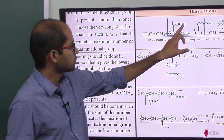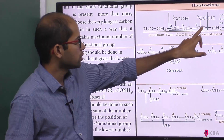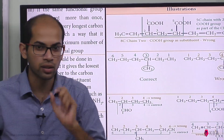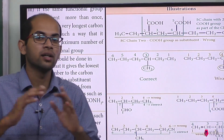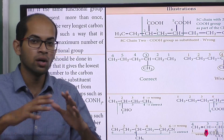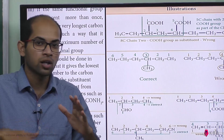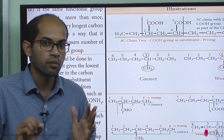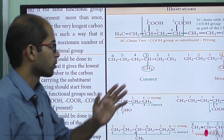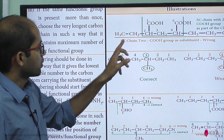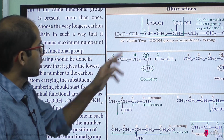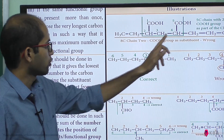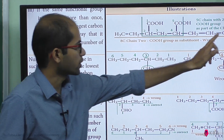If COH is present in the longest carbon chain, the two COH groups define the longest chain. Let's talk about numbering. How can we do numbering? 1, 2, 3, 4, 5, 6, 7, 8.